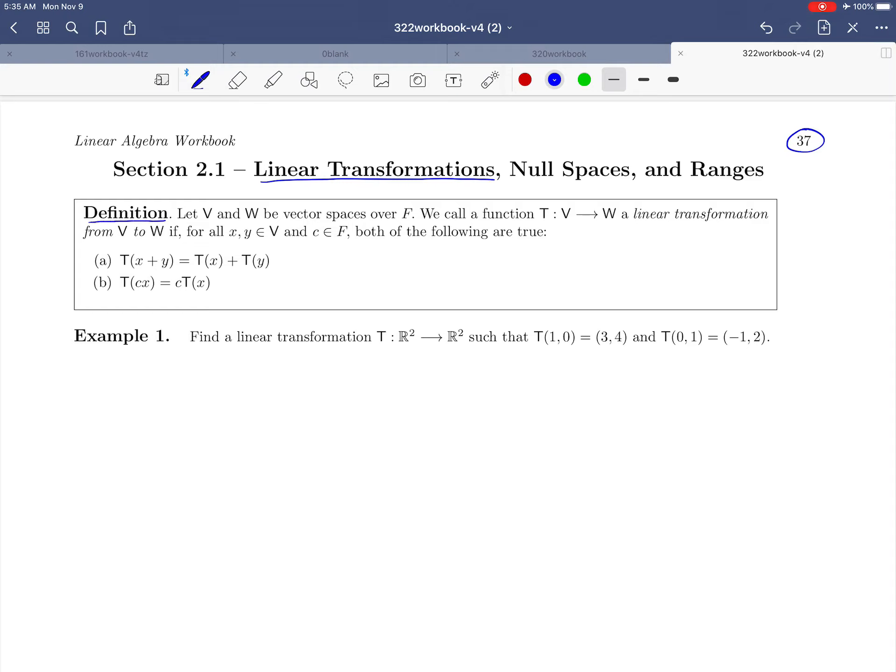Let's read through this together. So let V and W be vector spaces over a field F. We call a function T from V to W a linear transformation from V to W if, for all x and y in our domain V and every scalar c, both of the following are true.